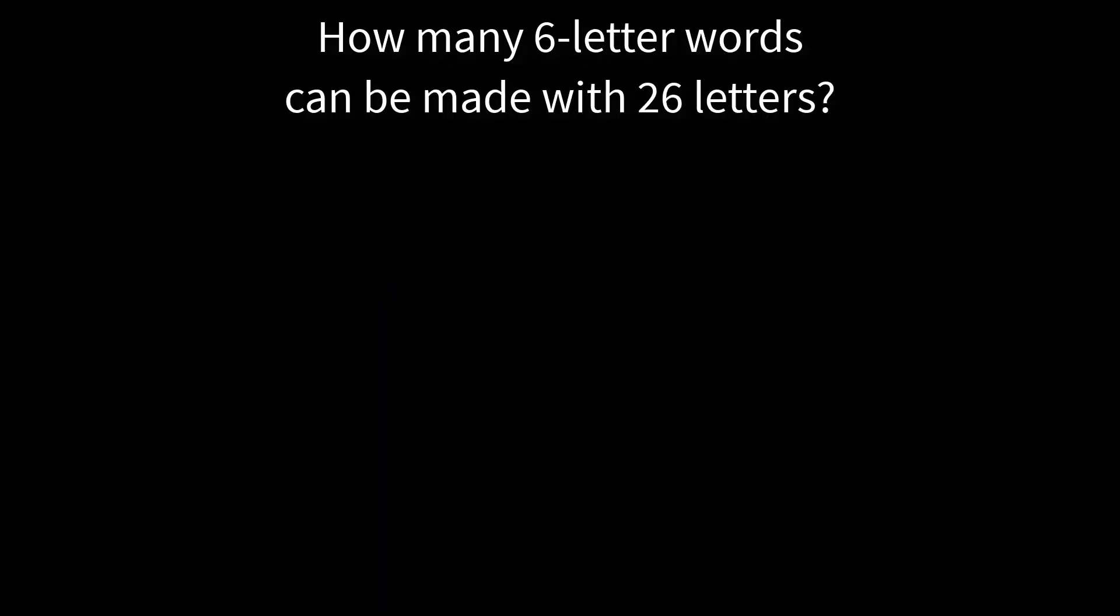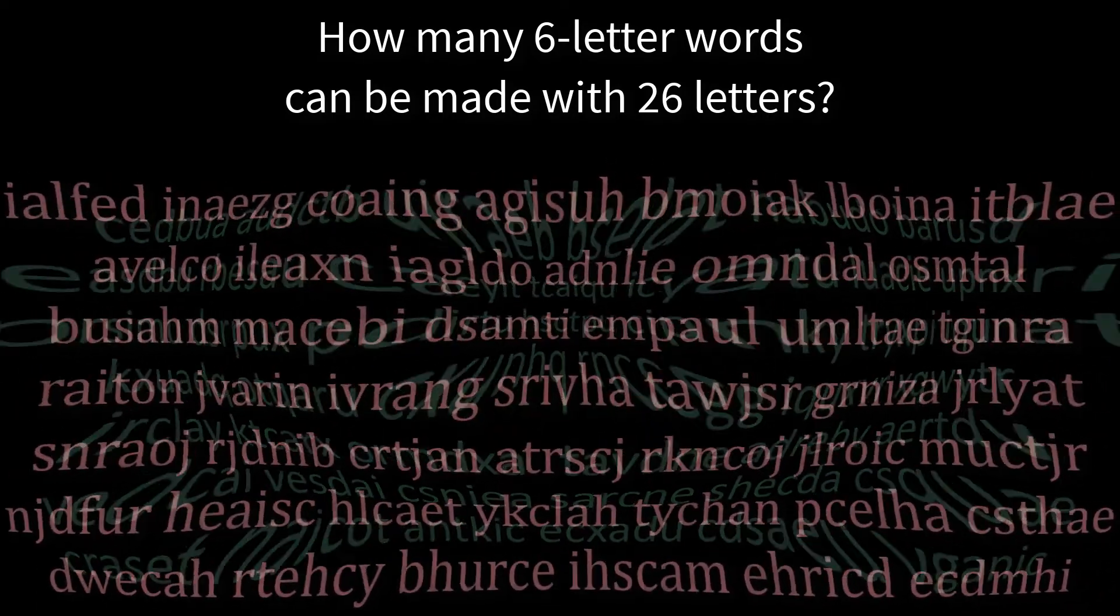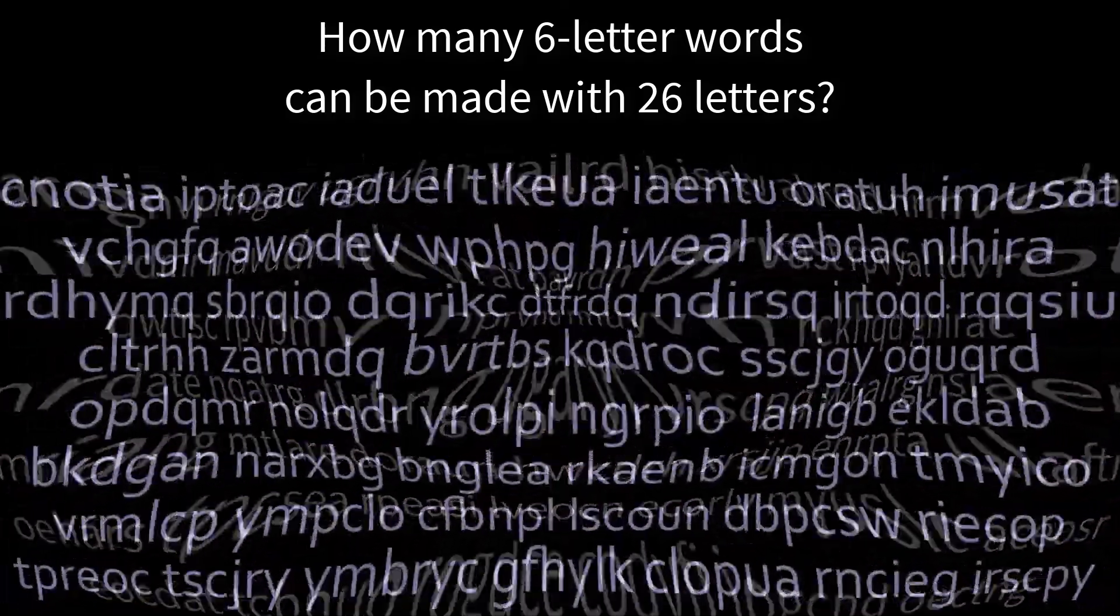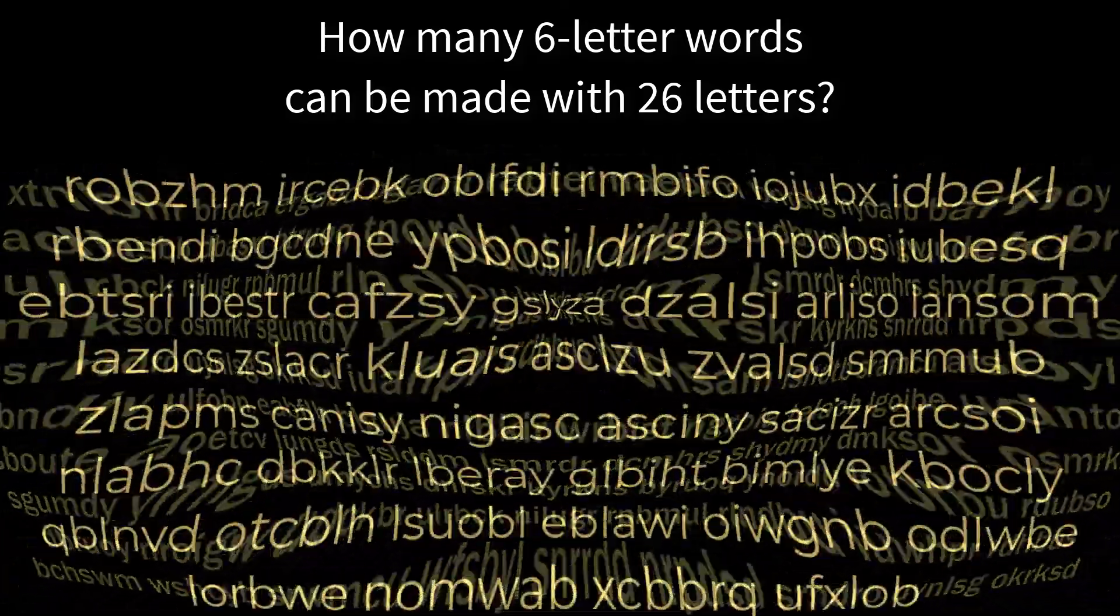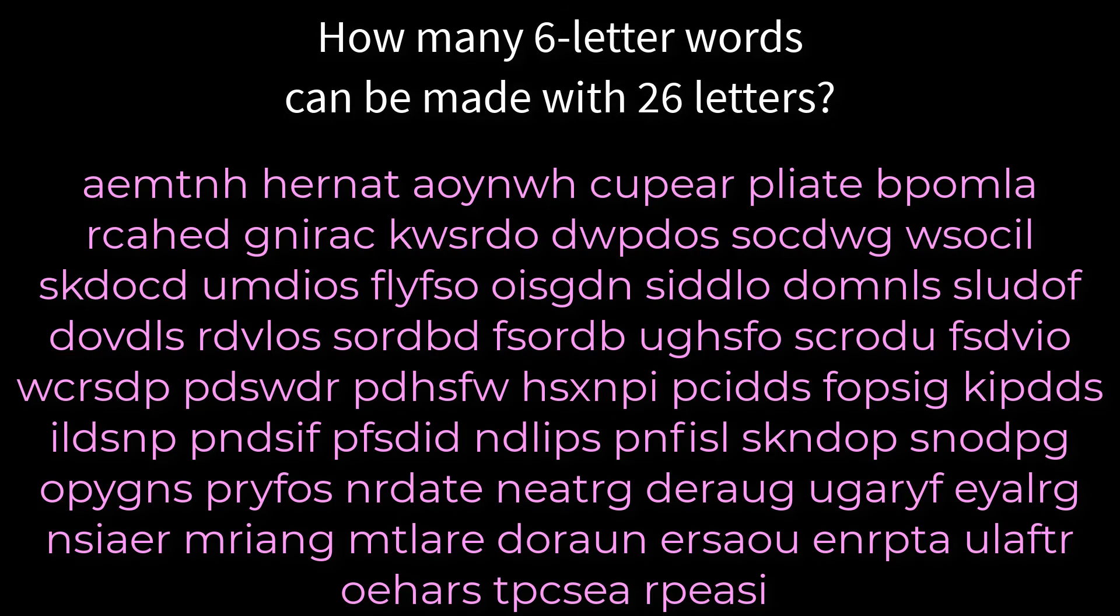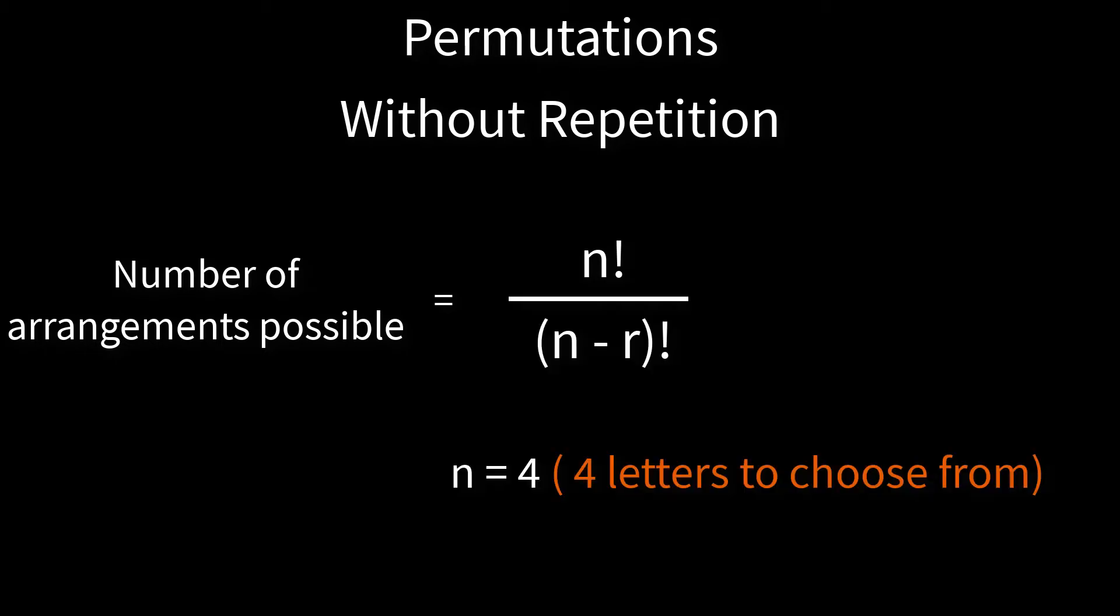Returning to letters, let's say you were asked how many six-letter words you could make from all 26 letters of the alphabet. Writing out all the possibilities would take a long time. That's where the formula comes in handy. It's n factorial divided by (n minus r) factorial, where n is how many things we have to choose from and r is how many we've to choose.